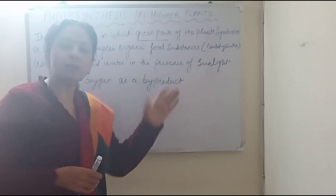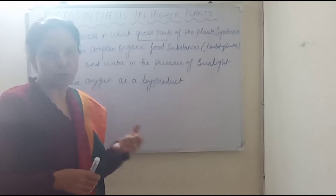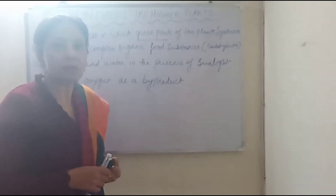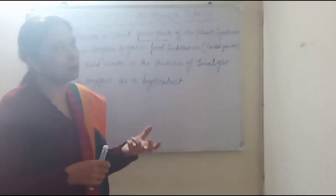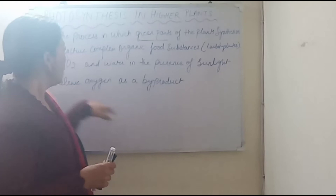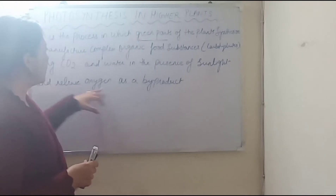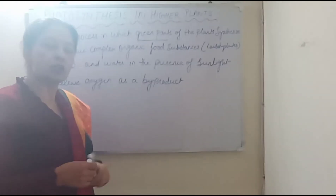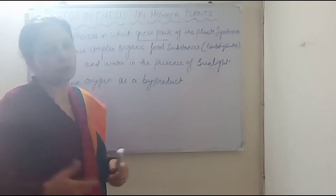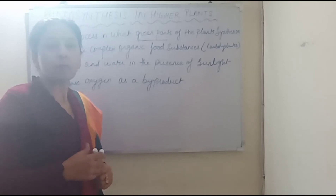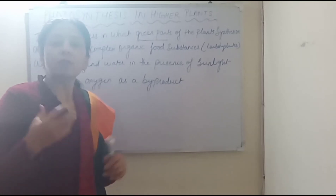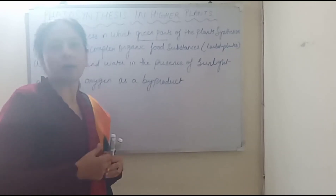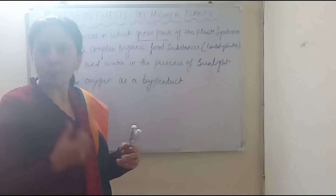This process occurs in the presence of sunlight, which is captured by pigments present in the plants. Oxygen is released as a byproduct. So this is the green part of the plant where the process of photosynthesis takes place.